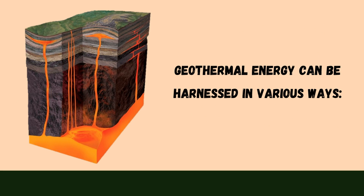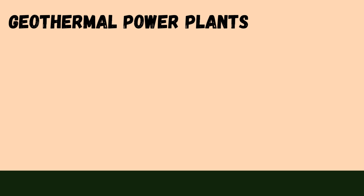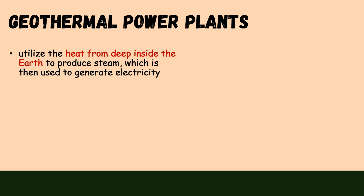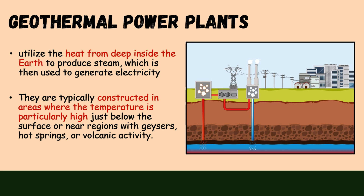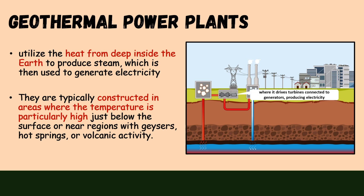Geothermal energy can be harnessed in various ways. Geothermal power plants utilize the heat from deep inside the earth to produce steam, which is then used to generate electricity. They are typically constructed in areas where the temperature is particularly high just below the surface, or near regions with geysers, hot springs, or volcanic activity. Here's a visual depiction of a geothermal power plant. The hot water or steam is brought to the surface where it drives turbines connected to generators, producing electricity.